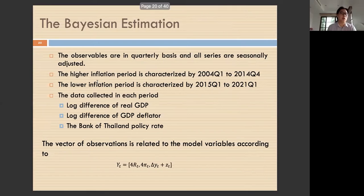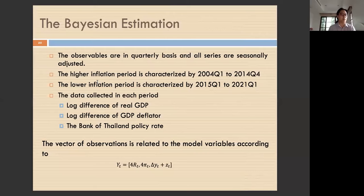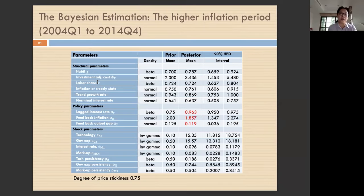Now we look at the Bayesian estimation. The observables are on a quarterly basis and all series are seasonally adjusted. We estimate in two periods: high and low inflation. The data used include real GDP, the GDP deflator, and Bank of Thailand policy rate. We estimate feedback on the output gap, feedback on inflation, and the persistence of the interest rate — for both the high and low inflation periods.